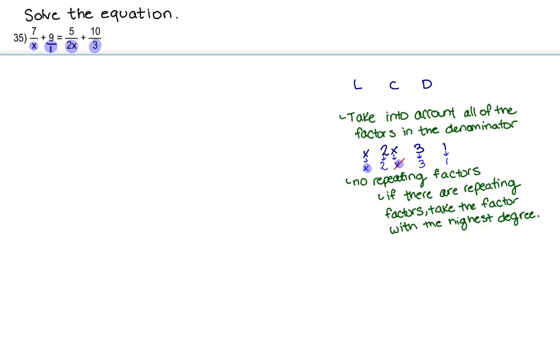So the factors that we're going to take into account for our LCD are going to be x, 2, 3, and 1. And when we combine all that together, that gives us 6x.